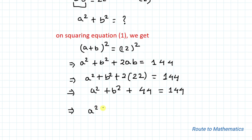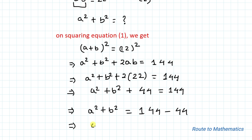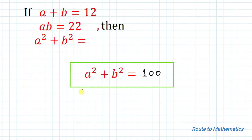So a squared plus b squared plus 44 equals 144. Taking 44 to the right-hand side, it becomes negative: a squared plus b squared equals 144 minus 44, which equals 100. Thus our answer is a squared plus b squared equals 100.